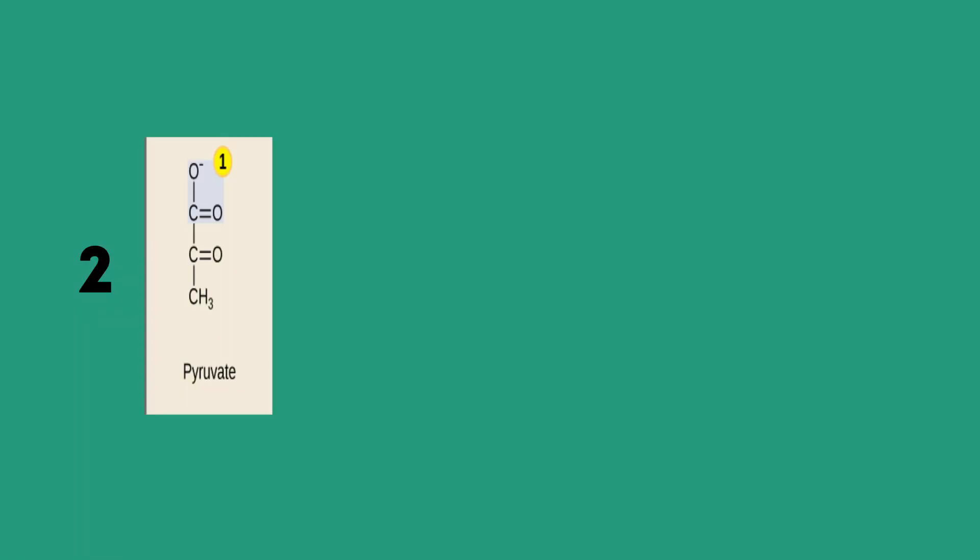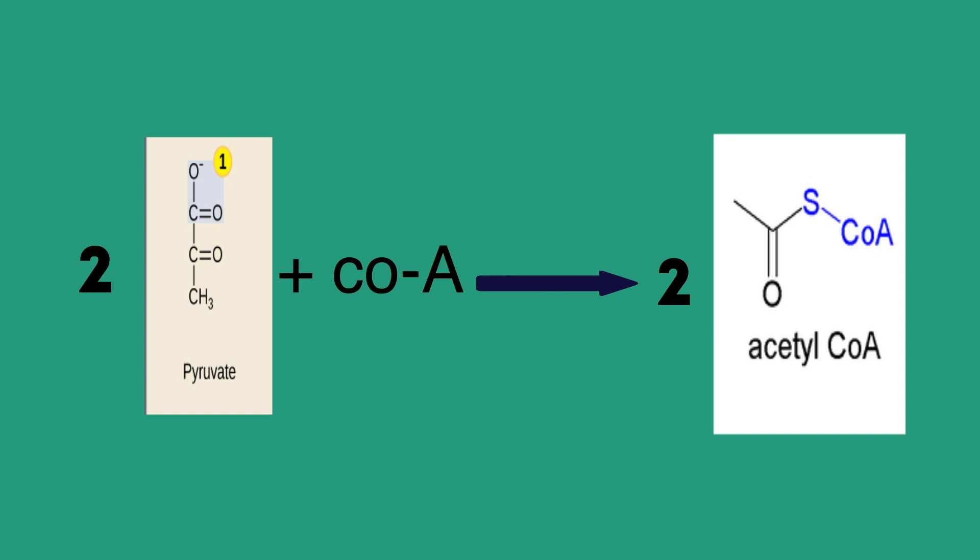Second, Krebs cycle. Now we are in mitochondria. Before we enter Krebs cycle, 2 pyruvate is oxidized in the presence of coenzyme A into acetyl-CoA and produces 2 NADH and 2 carbon dioxide.